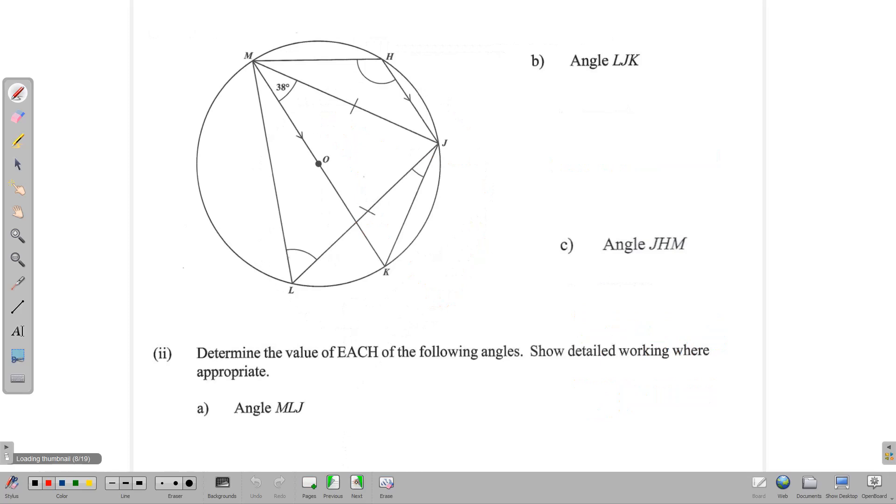Moving on to the other part of the question, we have to find each of the following. MLJ is here, it's already marked. To find MLJ, we need to find this angle here.